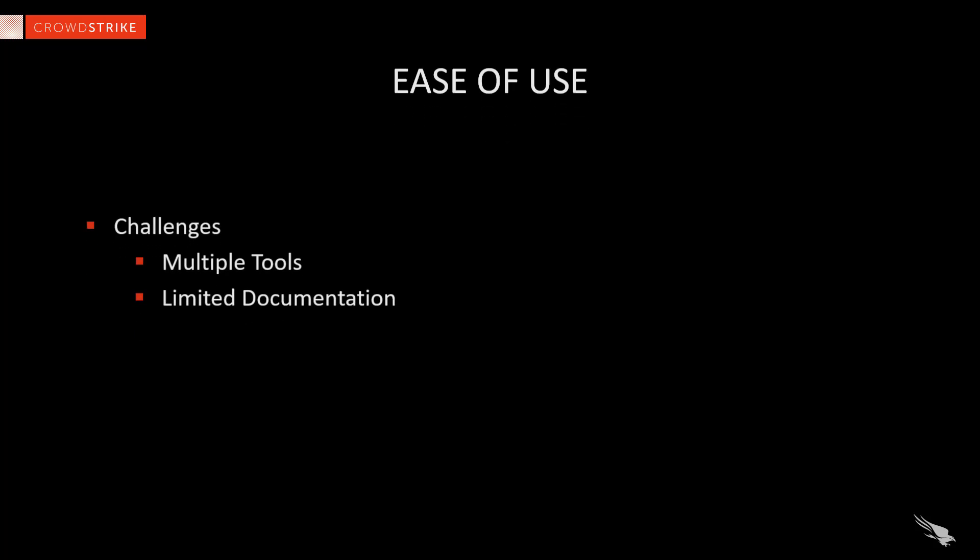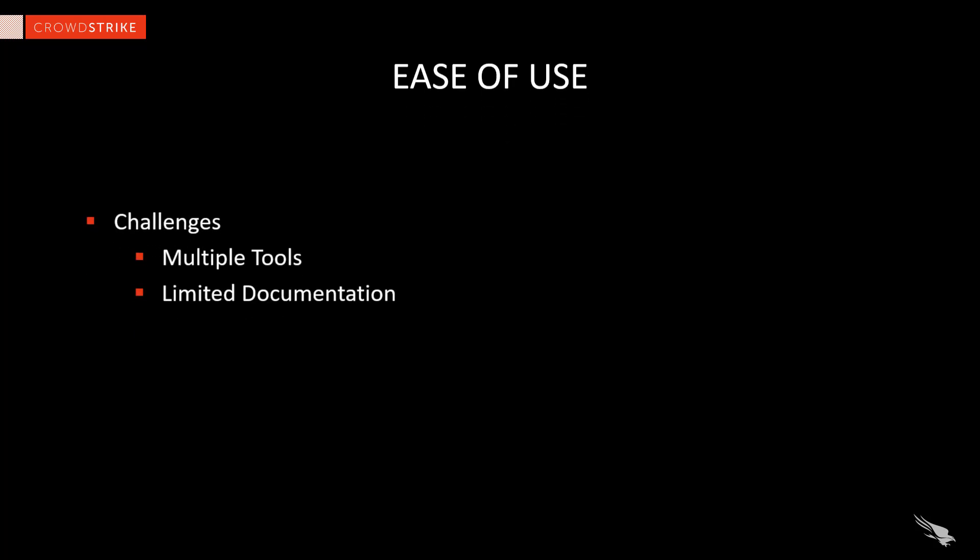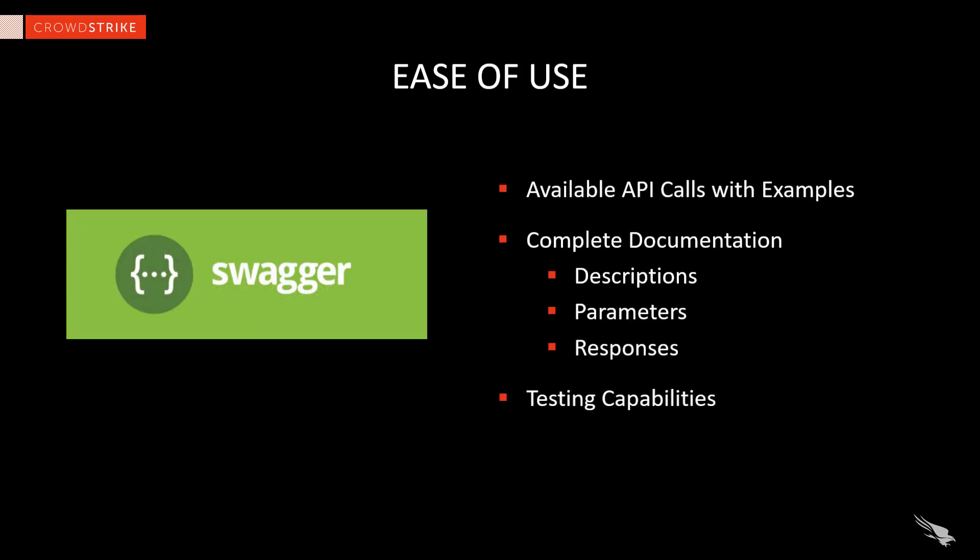Today, customers often face challenges with API development. They frequently use multiple tools like Terminal or Postman for testing, and documentation is often lacking. To address this, CrowdStrike is now leveraging the Swagger interface. This industry standard will provide customers with one place to see and learn about the available APIs. In addition to examples, customers will have immediate access in the UI to API descriptions, parameters, and response codes. Customers will also be able to generate and test code through Swagger.